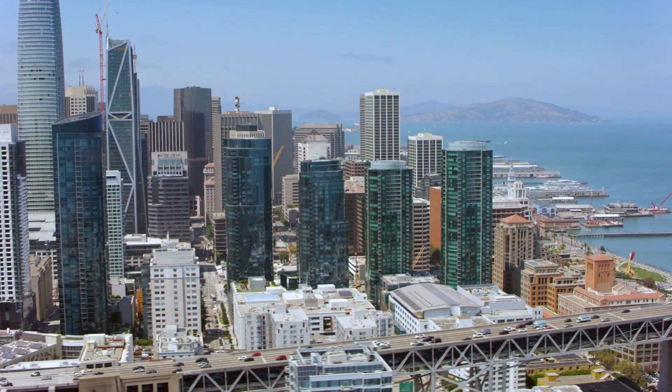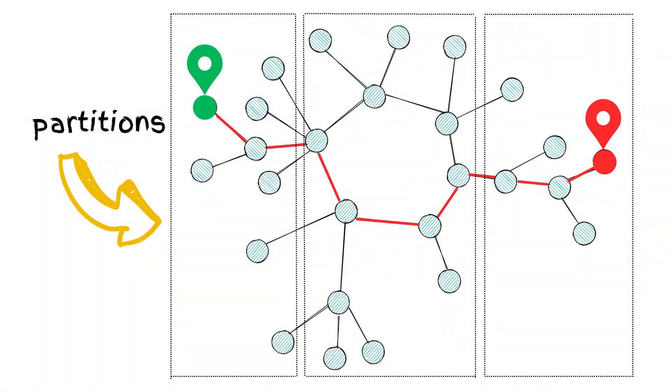So, they partitioned the graph and then pre-computed the best path within each partition. Thus, interacting with boundaries of graphed partitions is enough to find the best path.